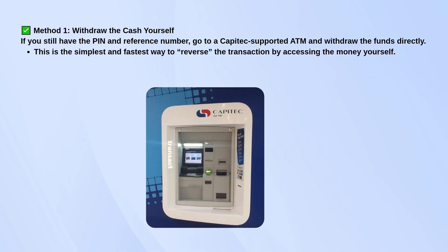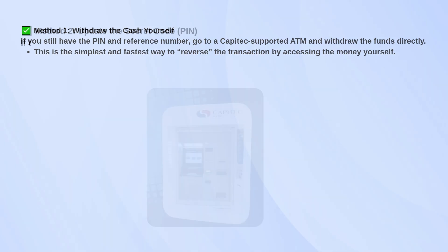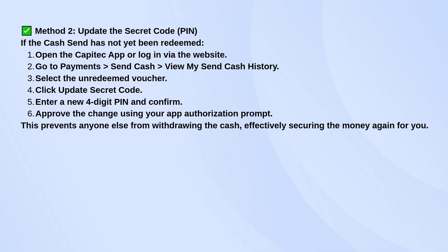If the person you sent it to hasn't withdrawn it yet, you can go into the Capitec app, tap on Payments, then Send Cash, and check your Send Cash history. Find the voucher that hasn't been used and there should be an option to update the secret code. You'll enter a new four-digit PIN and confirm it. That change locks the cash again and stops anyone else from accessing it unless they get the new code from you.